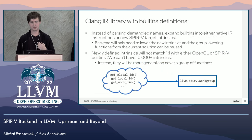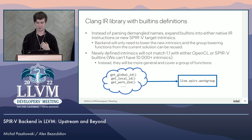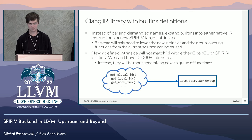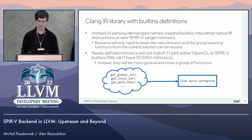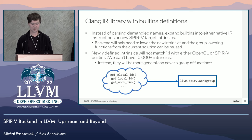Although the current built-in lowering mechanism is complete, we are working on a different solution. Instead of parsing the built-ins in the backend, Clang could link the compiled IR module with an IR library providing built-in function definitions. Those definitions would be based either on regular LLVM instructions when possible, or LLVM intrinsics — of course the intrinsics will need to be fairly general and cover a group of functions, we cannot have thousands of intrinsics. This way, Clang would already provide the implementation for most of the built-ins, not only for our backend but also for other backends. The backends would only need to lower the newly defined intrinsics, and we could reuse our current group and TableGen-based built-in lowering.